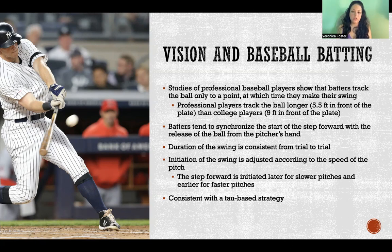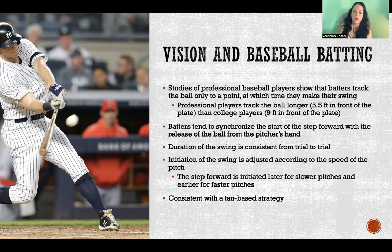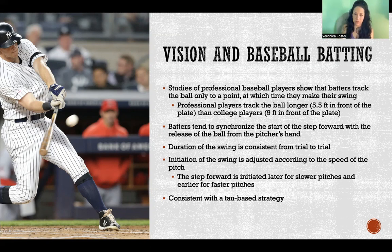Initiation of the swing is adjusted depending on the speed of the pitch. Using tau — time to contact — the batter estimates how much time they have based on the characteristics they detect when the ball is leaving the pitcher.